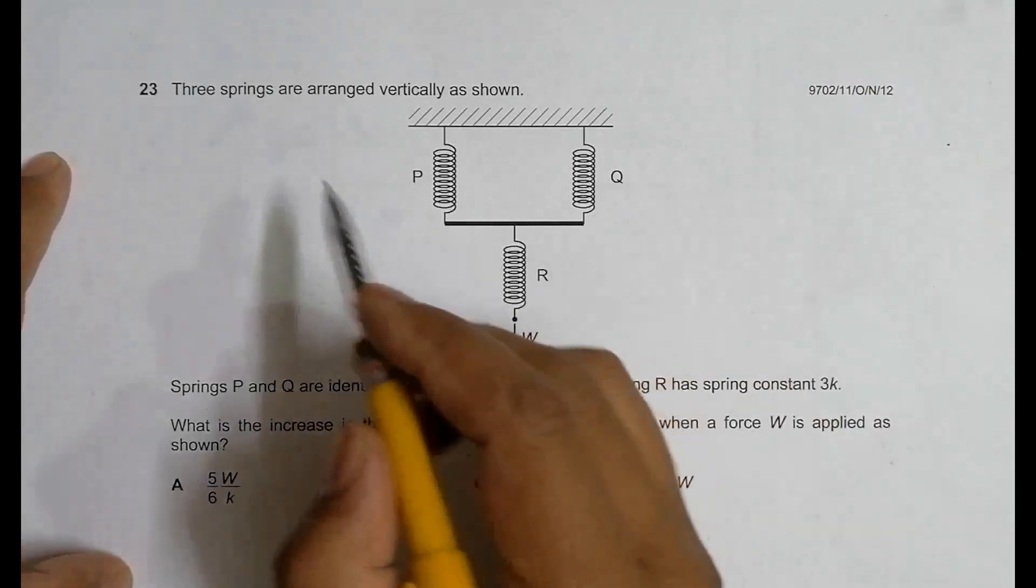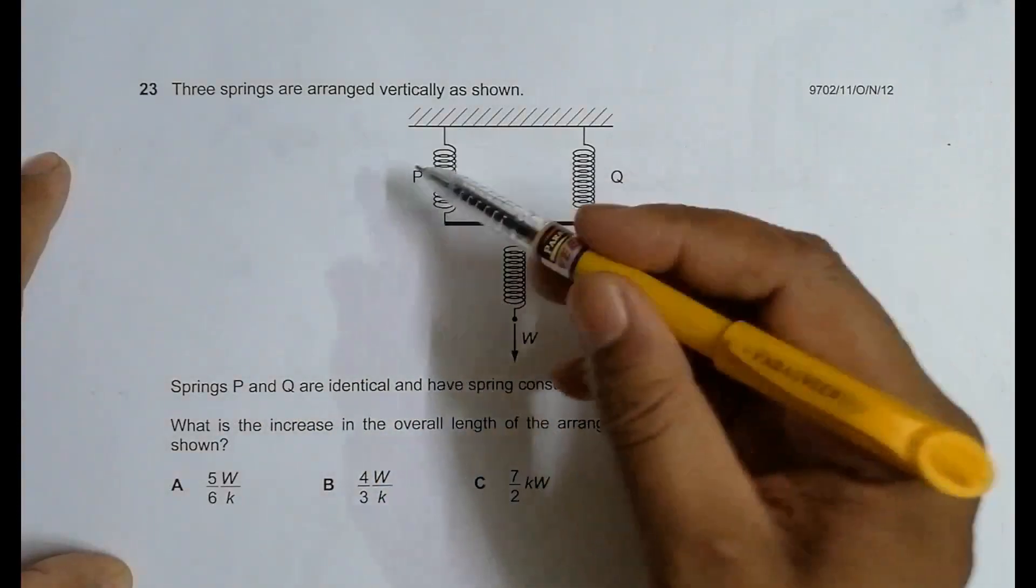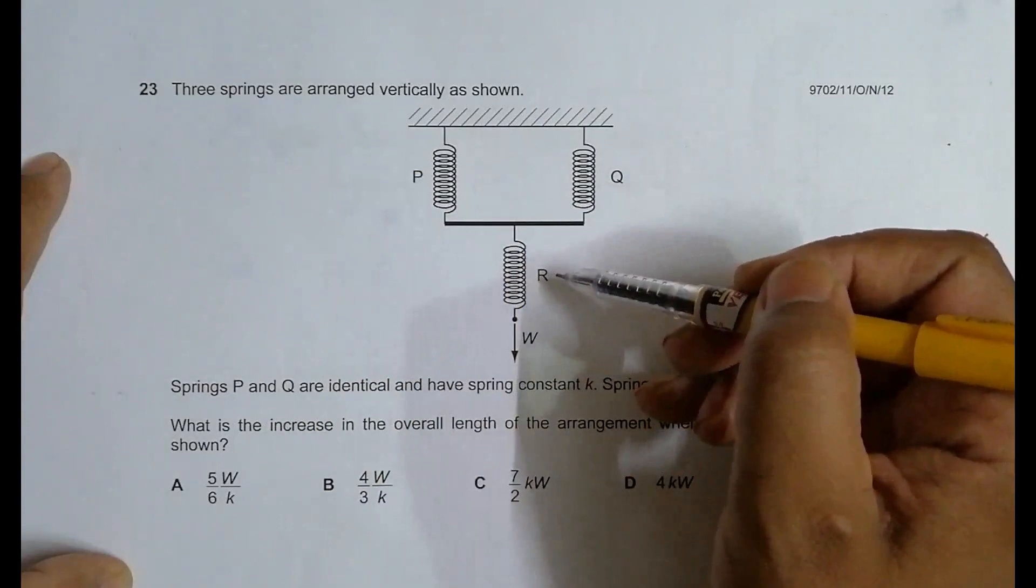It says that three springs are arranged vertically as shown. P and Q are in parallel and with that arrangement, this spring R is in series.